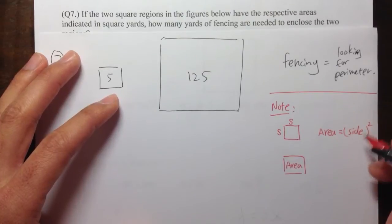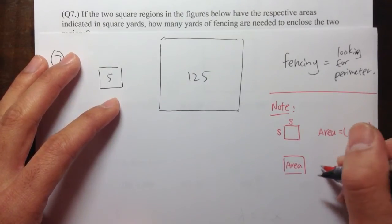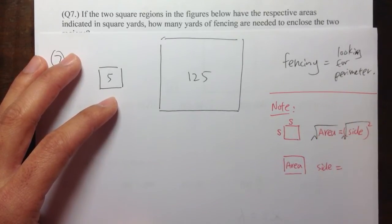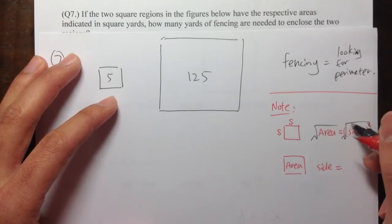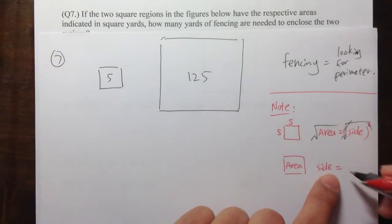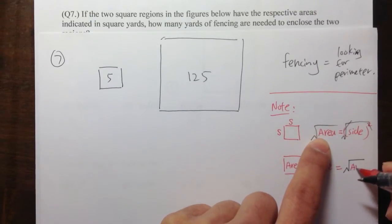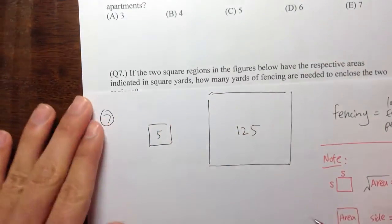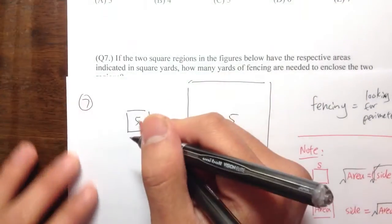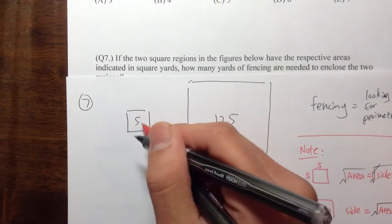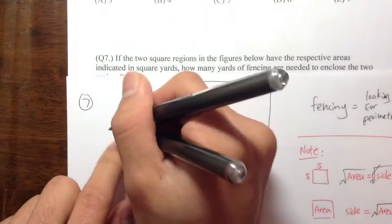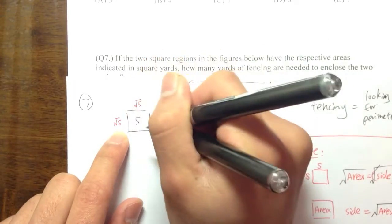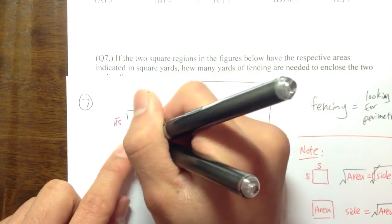What we can do to this equation to get the side is: if you take the square root on both sides, the square and the square root cancel. So the side is equal to the square root of whatever the area was given. In this case, the area is equal to 5 for this square, so each side will be square root of 5 — square root of 5 on all four sides.